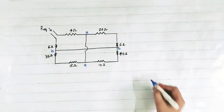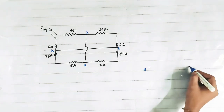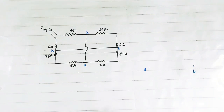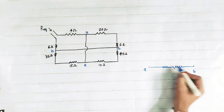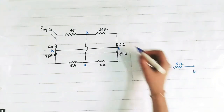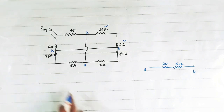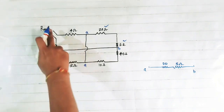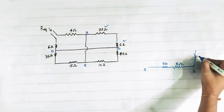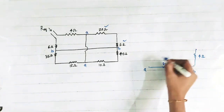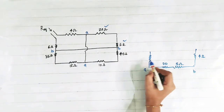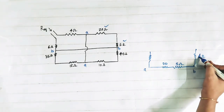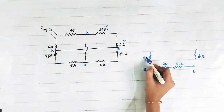Now we can redraw this circuit. Suppose this is point A and this is point B. We see that between A and B, this 20 ohm and this 5 ohm are connected, so we will connect the 20 and 5 ohm. We have to find the equivalent resistance between this A and — suppose this is 4 ohm — and this is the terminal around which we have to calculate our equivalent resistance. And this is 6 ohm and this is 4 ohm.